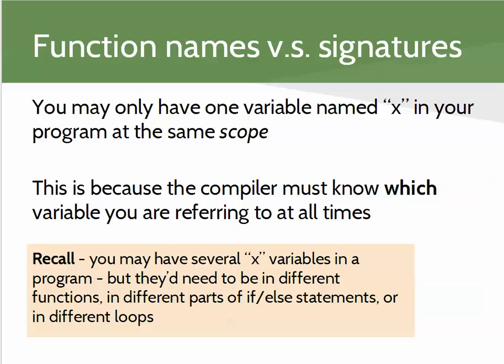We can certainly create different variables with the same name X as long as they're in different scopes — they could be in different functions, parameter names in multiple functions, local variables within multiple functions, or declared within if and else statements. As long as they're not in the same curly-brace scope, that's okay.